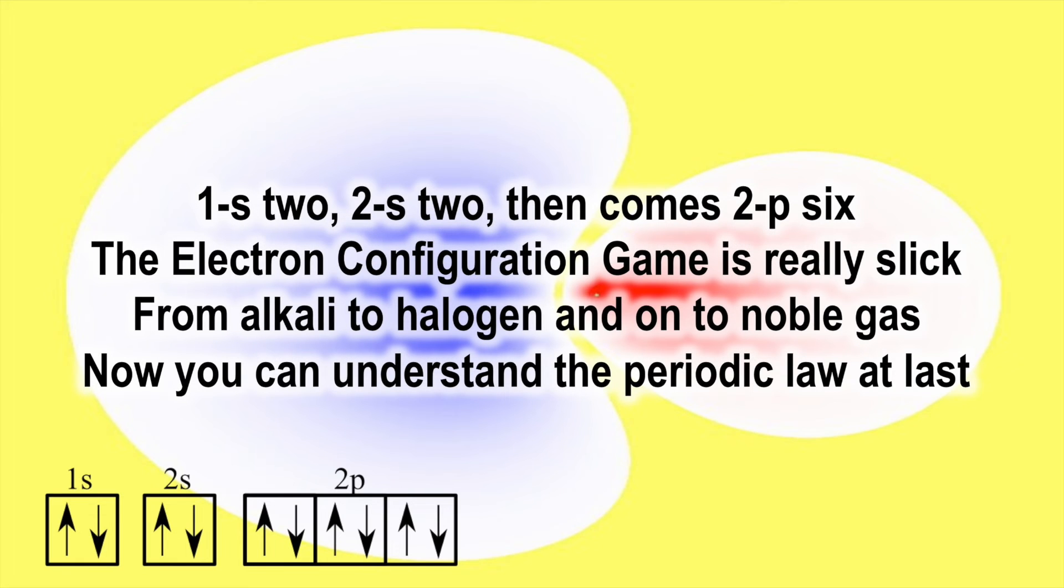And 1s two, and 2s two, and then comes 2p six. The electron configuration game is really slick. From alkali to halogen and on to noble gas, now you can understand the periodic law at last.